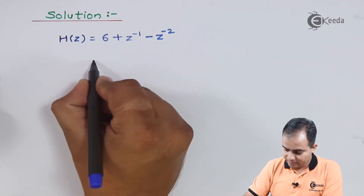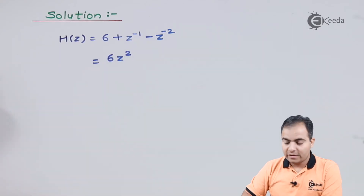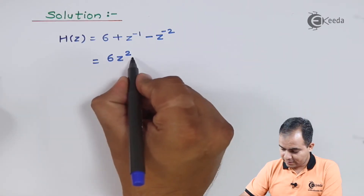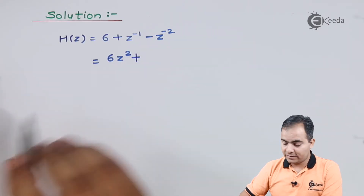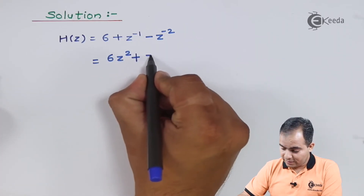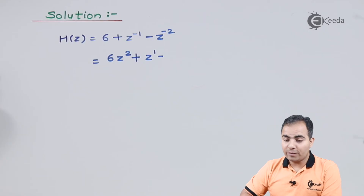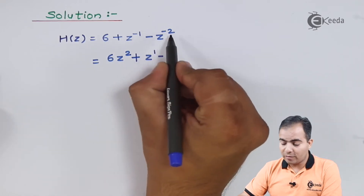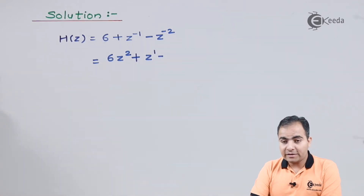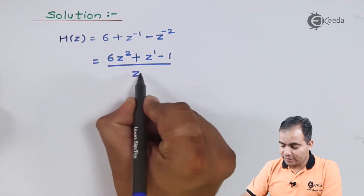Multiplying through by z², we get 6z² in the numerator. z⁻¹ multiplied by z² gives z¹, and z⁻² multiplied by z² gives z⁰ = 1. So the numerator becomes 6z² + z + 1, and we divide the whole expression by z².